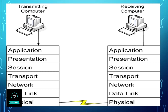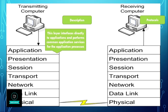The seventh layer is the application layer. This layer interfaces directly to applications and performs common application services for the application process. It works on protocols such as POP, SMTP, DNS, FTP, Telnet, and HTTP.